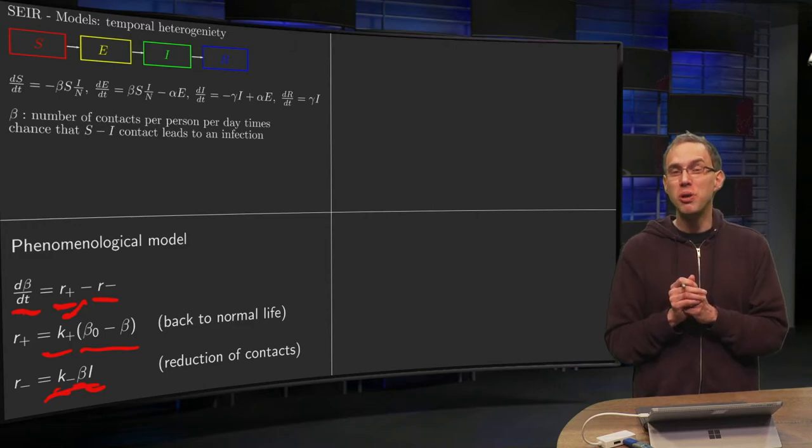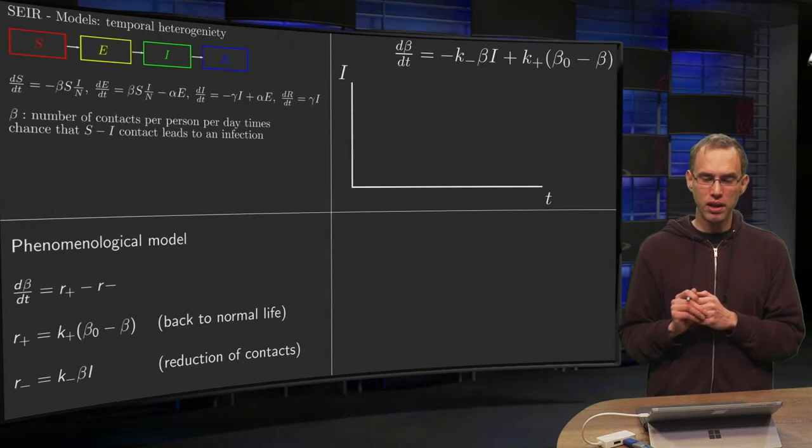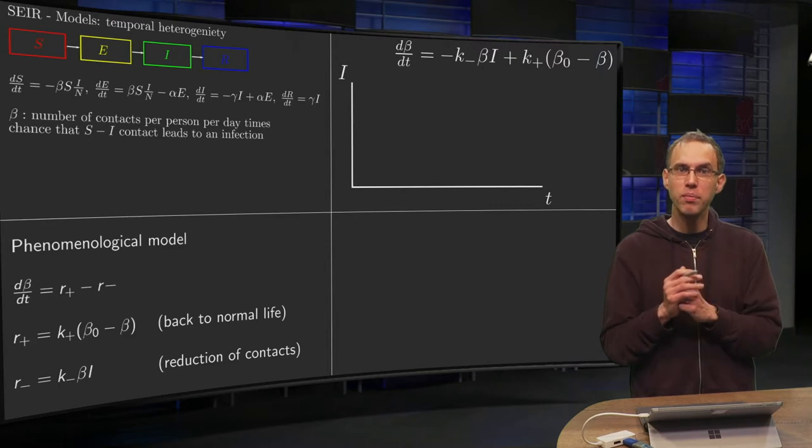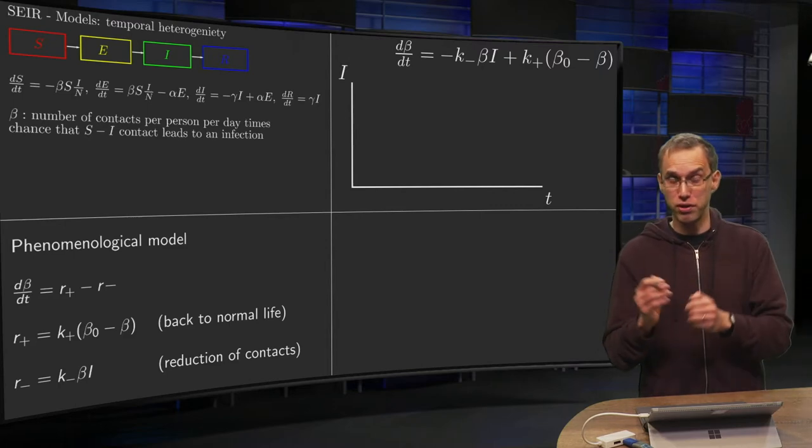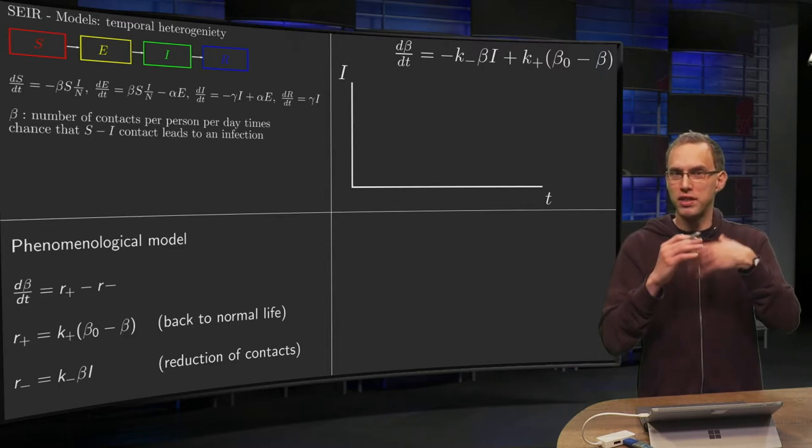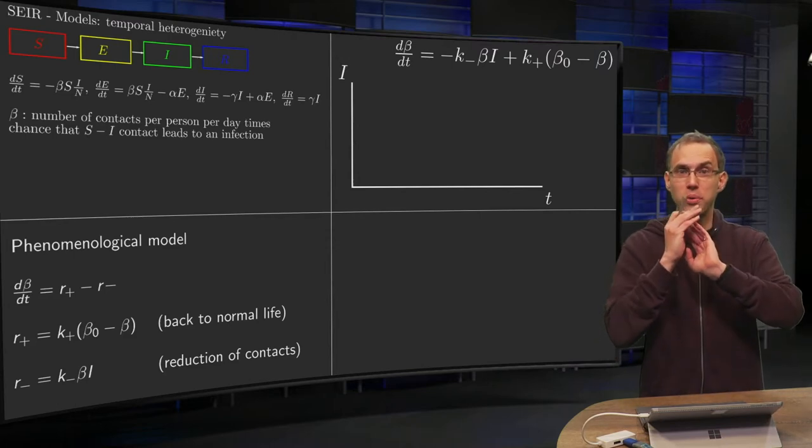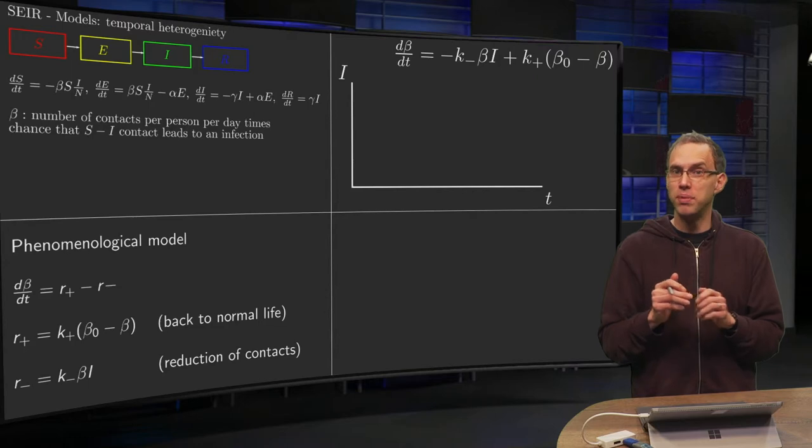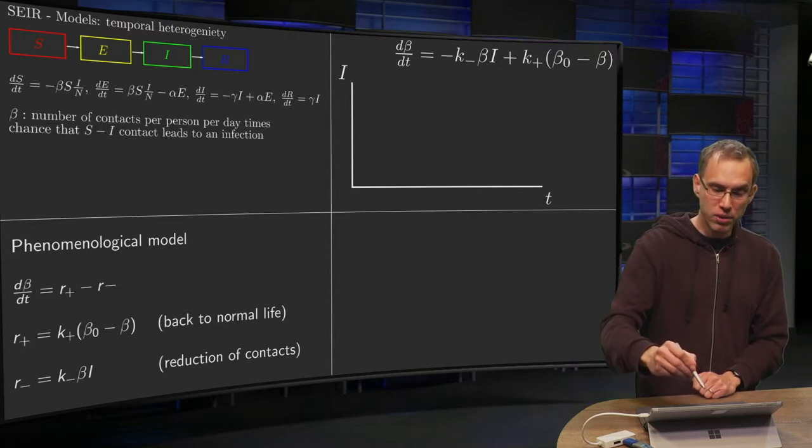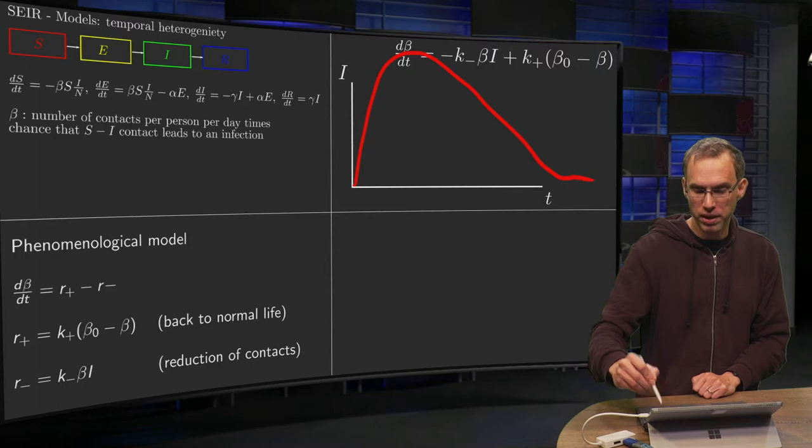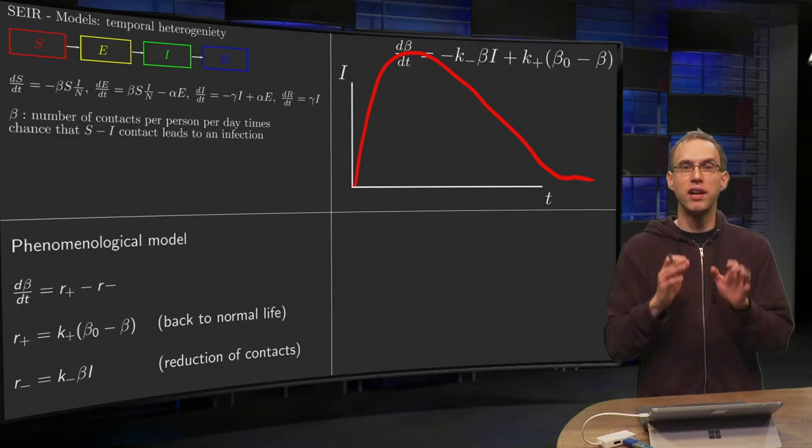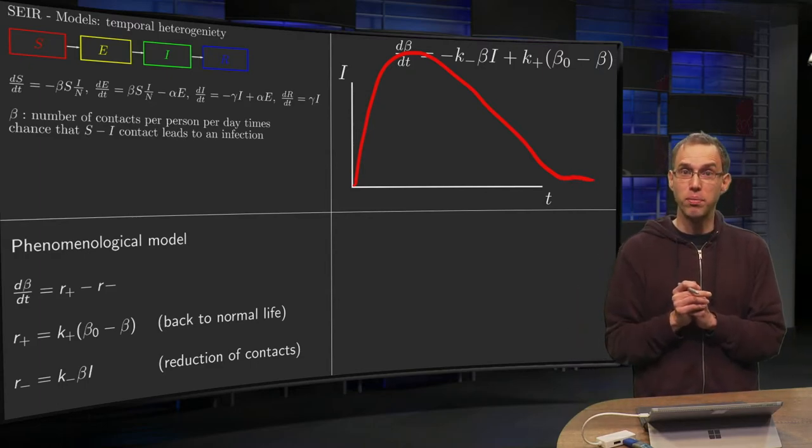How would the solutions look for such a model? Let's make a graph of infected versus time. As a reminder, I'll show the normal situation where you don't do anything—you just let beta stay constant. Then you typically get a solution with a large bump, and then it levels off. That is without temporal behavior.